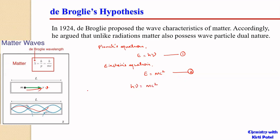Since ν is frequency, it can be written as c/λ. So replacing it, we get hc/λ = mc². If we take this for a material particle moving with velocity V, we can write h/λ = mV. Therefore, λ = h/(mV).